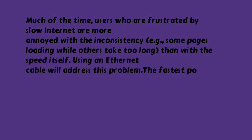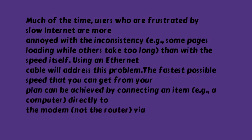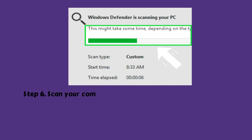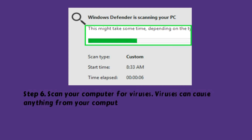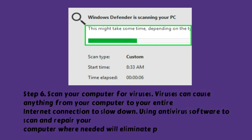The fastest possible speed that you can get from your plan can be achieved by connecting an item, e.g., a computer, directly to the modem — not the router — via an Ethernet cable. This will limit internet access to include only the wired item. Step 6: Scan your computer for viruses. Viruses can cause anything from your computer to your entire internet connection to slow down. Using antivirus software to scan and repair your computer where needed will eliminate problematic programs.